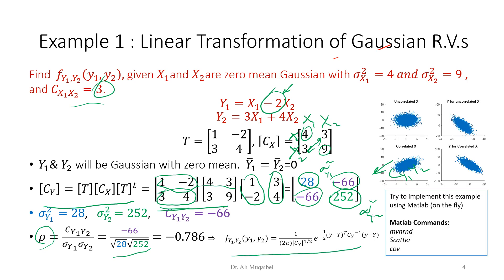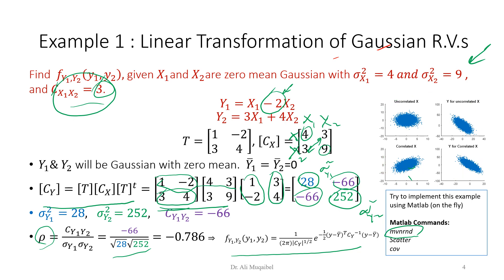The joint PDF is obtained by substituting the numbers into the Gaussian formula. On the right-hand side, we can implement this using MATLAB. There is a command called mvnrnd — multivariate normal random variable — that lets you feed in the mean and covariance and generates samples accordingly. You can use scatter plots and the covariance command to visualize results: starting with joint uncorrelated inputs, introducing correlation, doing the transformation, and observing how the transformation results in negative correlation.